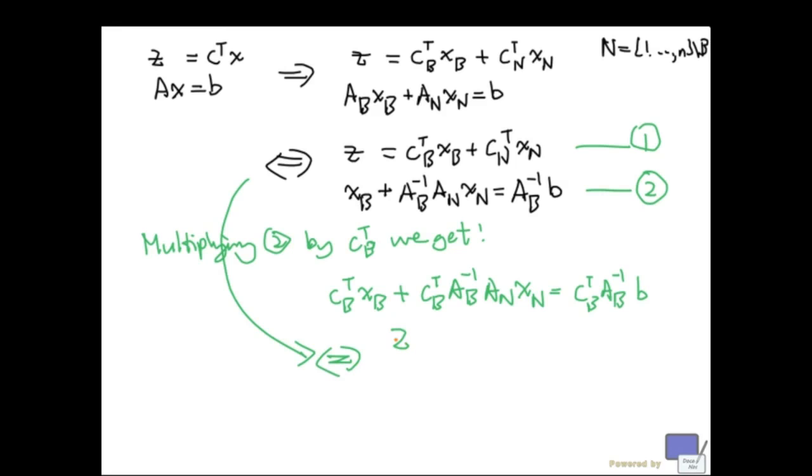And this is what we get. So I'm going to bring this over. Now, what you want to notice is, this is simply same as y star transpose. So this is going to be minus y star transpose A N X N plus C N transpose X N. And here I have X B plus A B inverse A N X N equal to B.